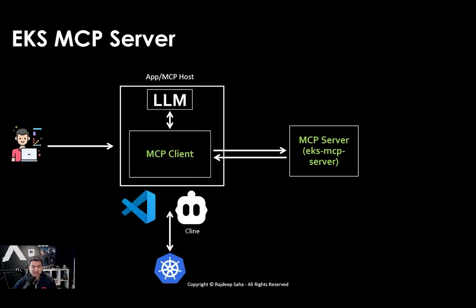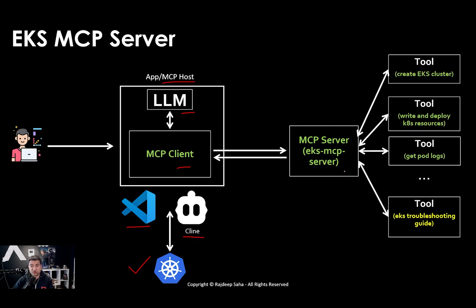So what is this EKS MCP server? This is the high-level architecture. You need to have an MCP host, which will have access to a large language model and MCP client. For this demo, I'm using Visual Studio Code along with Cline, which will be interacting with our Kubernetes cluster. It knows which cluster to interact with because it has access to the kubeconfig file. The MCP client will interact with the EKS MCP server, which uses many different tools: creating EKS clusters, writing and deploying Kubernetes resources, reading pod logs. And notably, this EKS MCP server is the official one from AWS, trained on years of EKS troubleshooting knowledge.